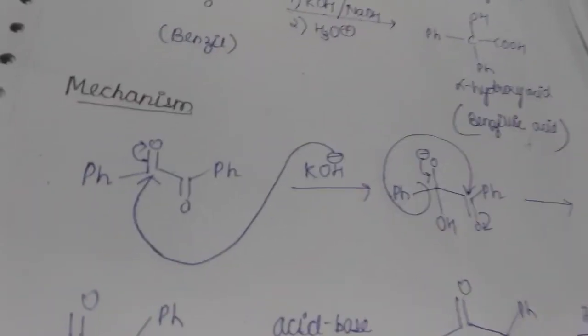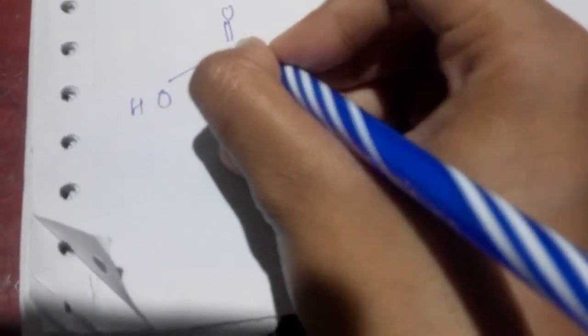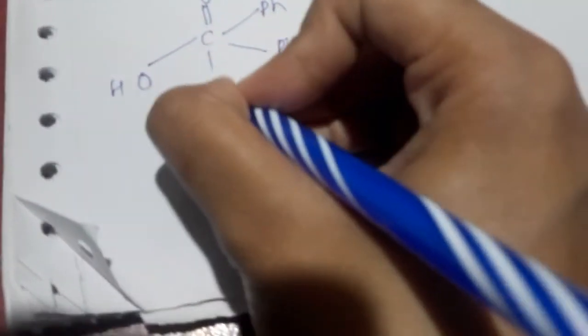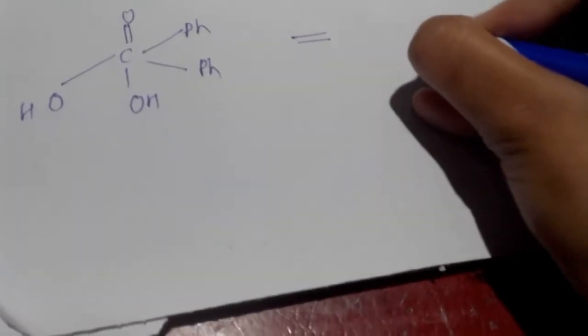Now in the second step since we had H3O+, if we give this H3O+ to it, as a result we get this as the answer. This is the alpha-hydroxy carboxylic acid, so this is basically the benzilic acid that we got.